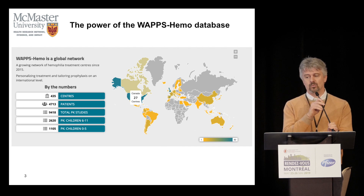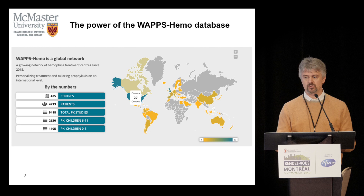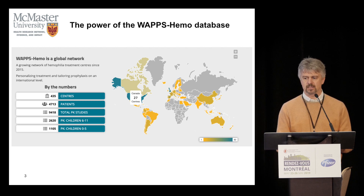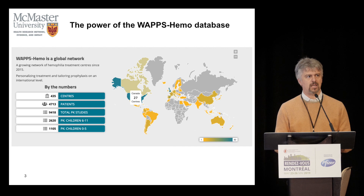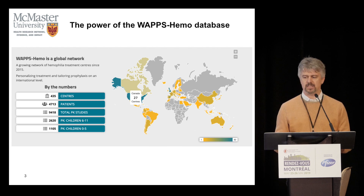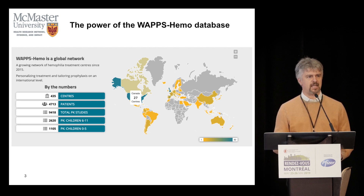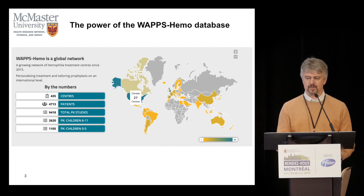I couldn't find a way of doing it, and actually here it is — and it is here not only for us in Canada. WAPS is currently used in a bunch of countries, 435 centers. We have profiled over 4,000 patients, 10,000 PK studies. Which to me means it's useful, because if not, I would imagine it would not be used this way. And there are 27 centers in Canada using it for their patients.